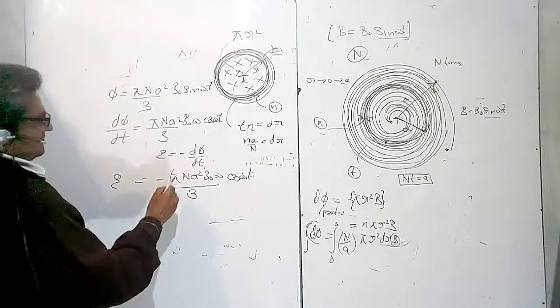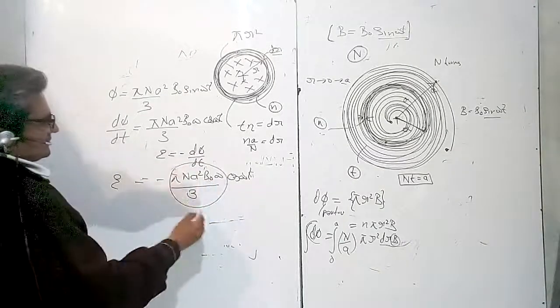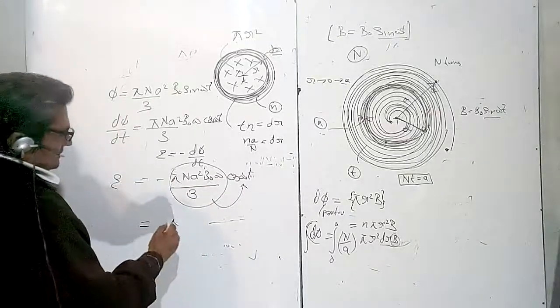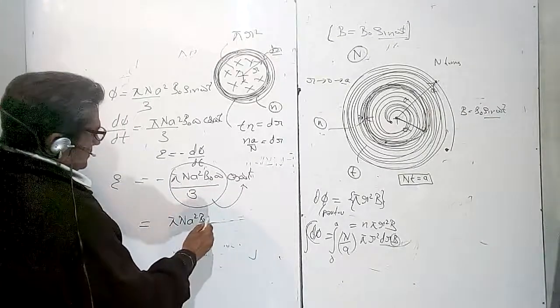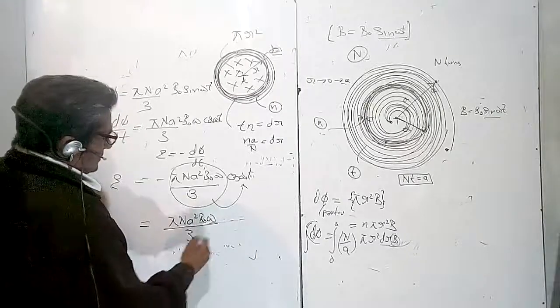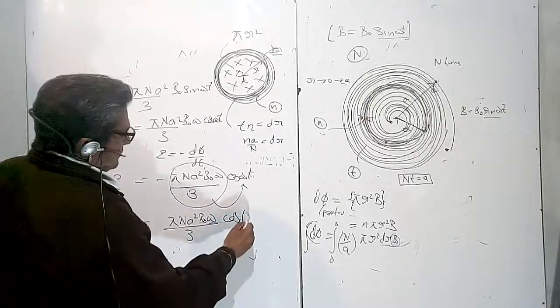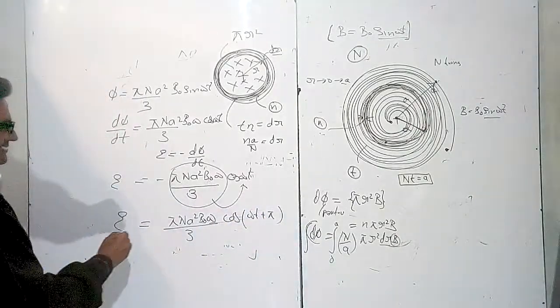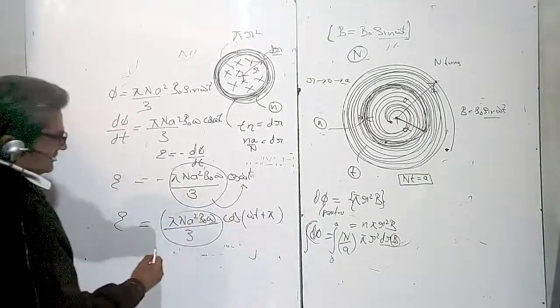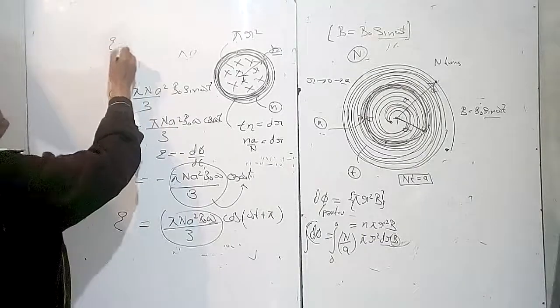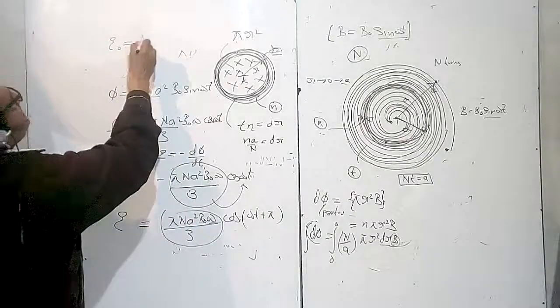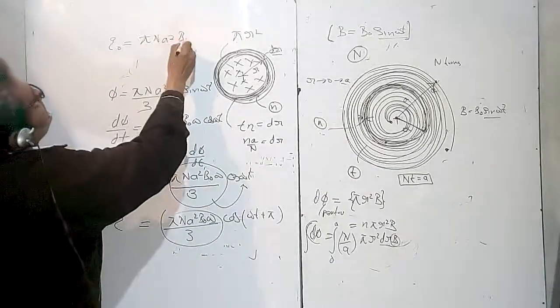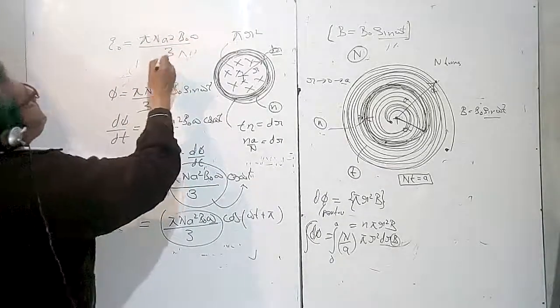The peak value is the answer: πNA²B₀ω upon 3. This is my peak value, so this is my answer. The E₀ value is πNA²B₀ω upon 3. This is the answer.